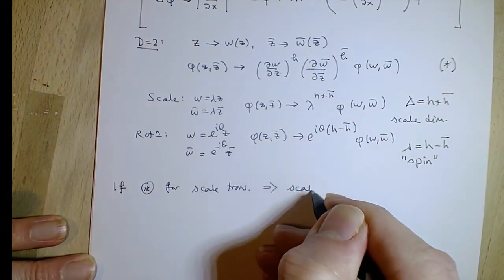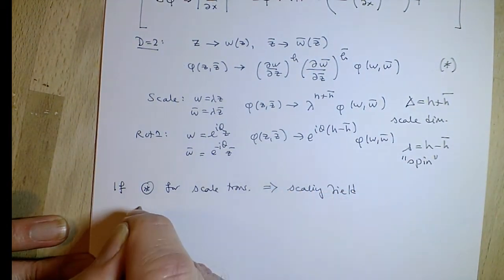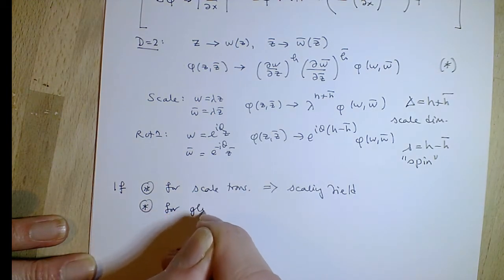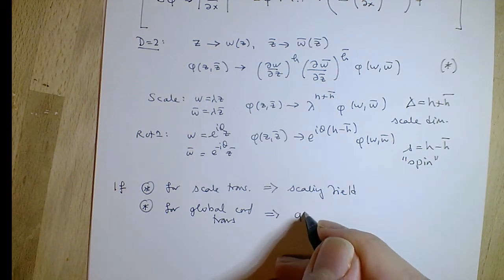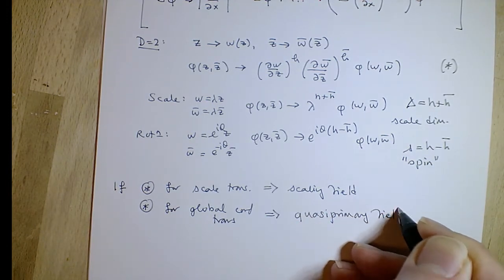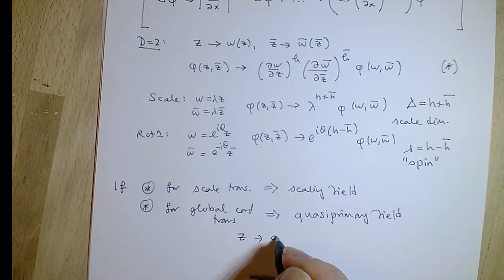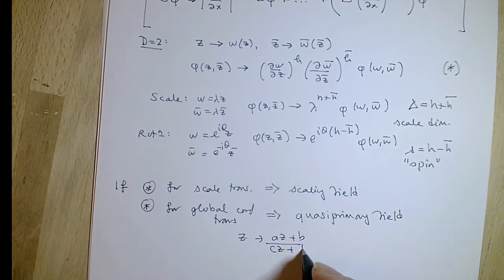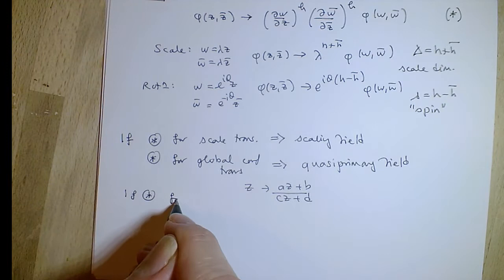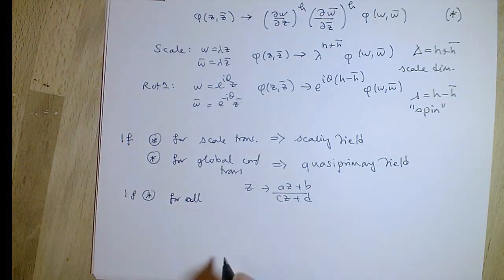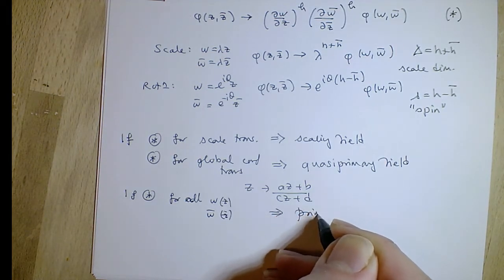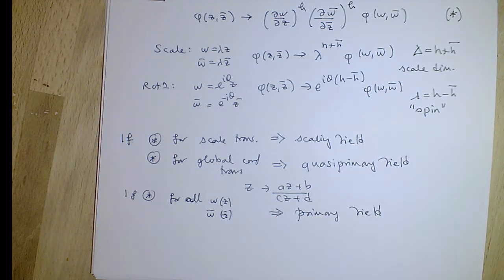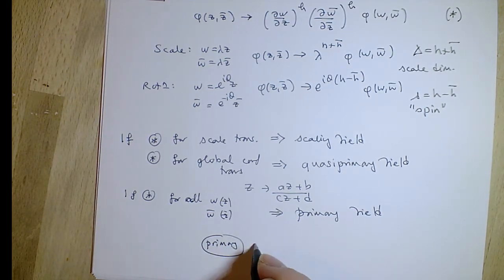There are a special set of globally defined transformations z goes to (az+b)/(cz+d) that map the plane to the plane including infinity. If a field satisfies the transformation law for all of those, it's called a quasi-primary field. If for a more general transformation the field obeys exactly the same law for any w(z) and w-bar(z-bar), it's called a primary field — the most restrictive type of transformation law. So primary fields are special examples of quasi-primary fields.